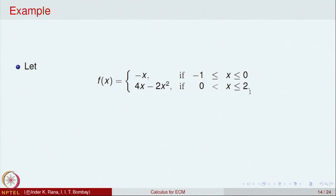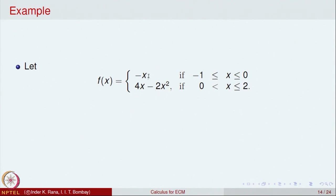On the interval [-1, 0] the function is -x, which is continuous. On the open-closed interval (0, 2] it is defined by a quadratic, which is also continuous. The only point to check is x = 0. The left limit at 0 is found by taking a sequence x_n converging to 0 from the left, giving f(x_n) = -x_n, so the left limit exists and equals 0.